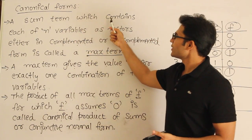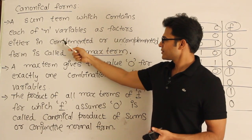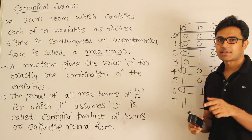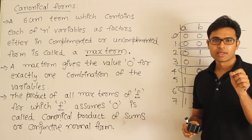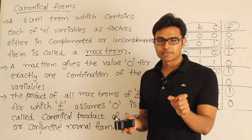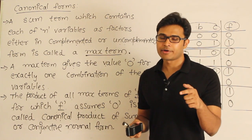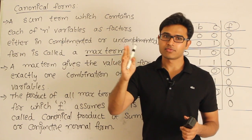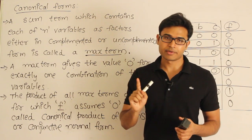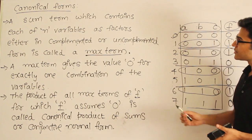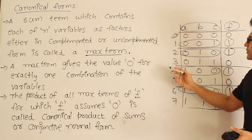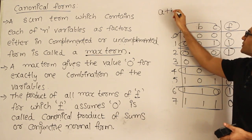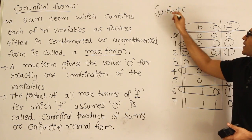A sum term which contains each of n variables as factors, either in complemented or uncomplemented form, is called a max term. We use the term 'max term' to represent the sum. Min term is used to represent the product. If the product contains all the variables, either in complemented or uncomplemented form, that is called a min term. Max term means it should contain all the variables present in the function, in either complemented or uncomplemented form. For example, if the function has variables a, b, c, a max term will be a plus b prime plus c.